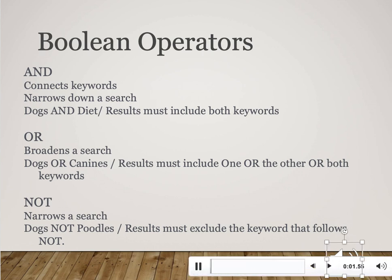Now we'll switch gears from subject headings to Boolean operators. In this class you'll use three Boolean operators in your searching: AND, OR, and NOT. You'll use these to customize the type of results you get back when you do a keyword search. You use Boolean operators the same way you would use 'and,' 'or,' and 'not' in a sentence.